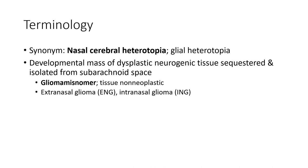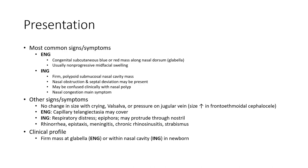There are two main types: extra-nasal glioma (ENG) and intra-nasal glioma (ING). The most common presentation of ENG is a subcutaneous blue or red mass along the nasal dorsal midline. It is usually non-progressive, presenting as mid-nasal swelling.